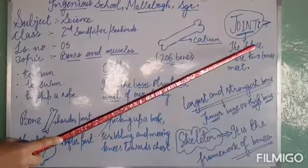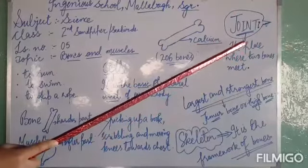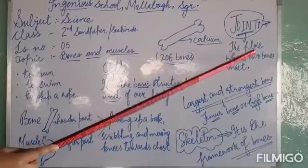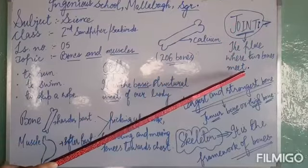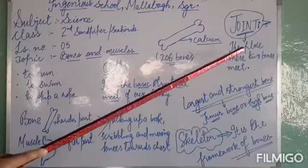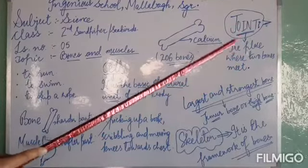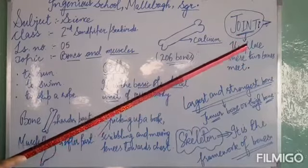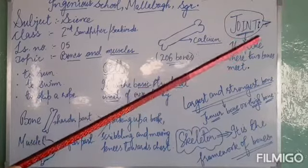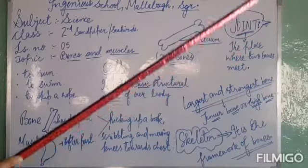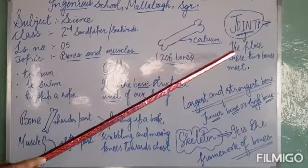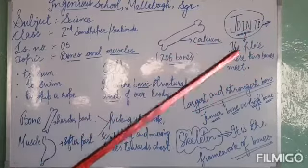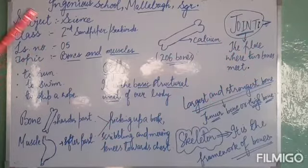What do joints do for us? Joints help us to bend our body. They also help us to turn and twist our body.